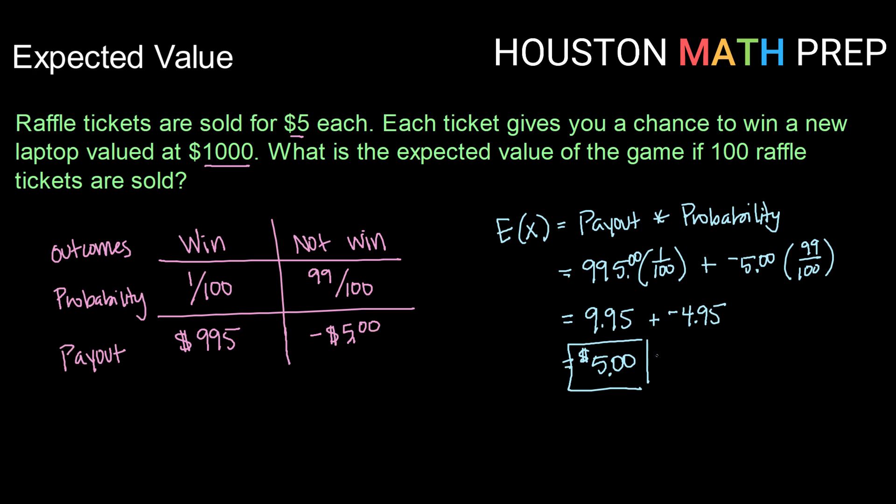A positive expected value. Think about this again — our expected value is not actually a possible scenario. There are only two scenarios: you either win the laptop and you are up $995, or you do not win and you are out the $5 you paid for your raffle ticket. So our expected value of gaining $5 is not a possibility, but it is the average, or the expected value of the game overall. Alright guys, that does it for this video. We'll catch you in the next one.